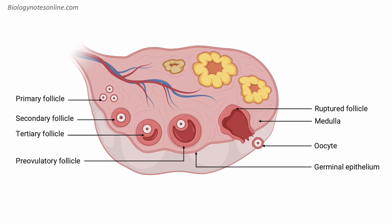During ovulation, the pre-ovulatory follicle bursts, releasing the mature egg into the fallopian tube. This ruptured follicle then transforms into a new structure called the corpus luteum. The corpus luteum is a temporary gland that produces hormones like progesterone and estrogen. These hormones prepare the uterus for pregnancy.